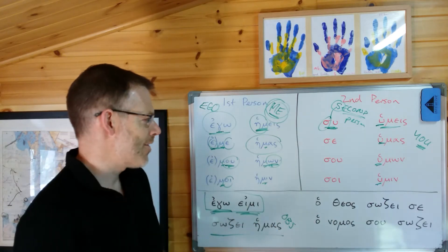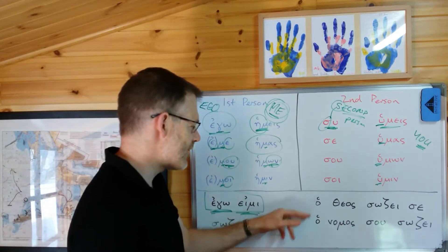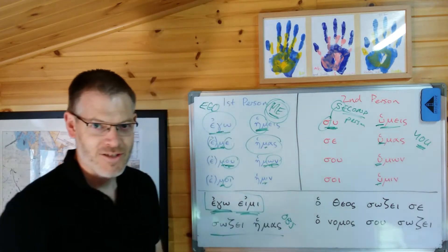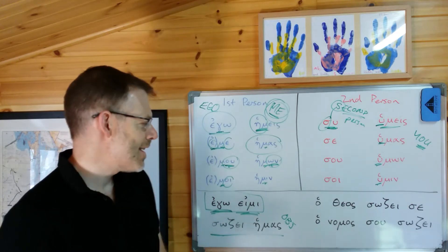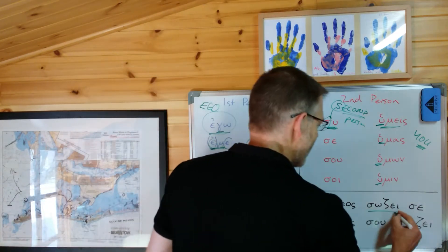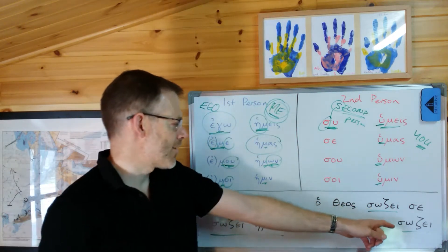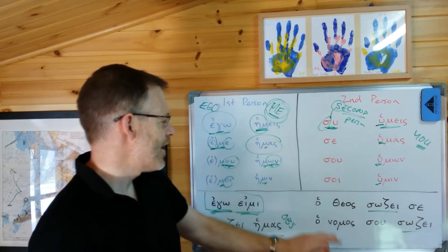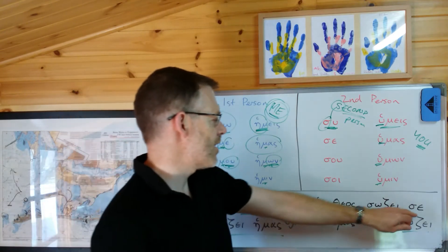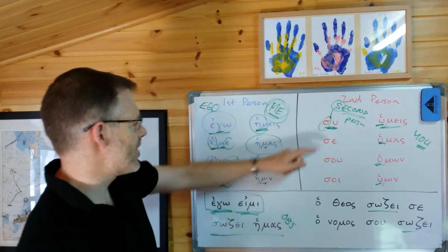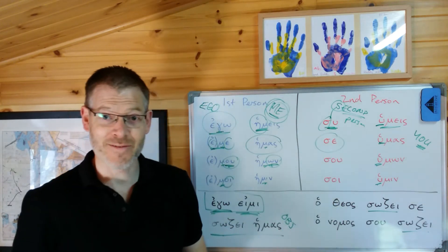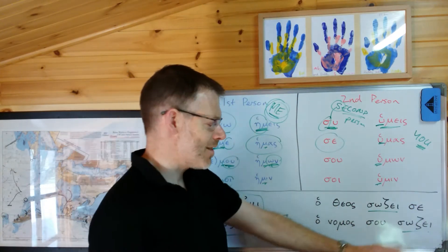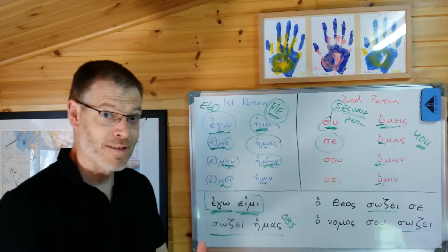Let's take a look at a couple of examples of how you could use the second person pronoun. Here are two sentences: ho theos sōzei se, and ho nomos su sōzei. The verb is fairly easy - he saves in both instances. In the first one, ho theos - God saves - se. What's se? Well, su, se - it's the singular accusative second person pronoun, and it just means you. So: God saves you.